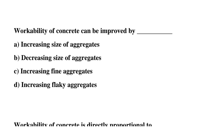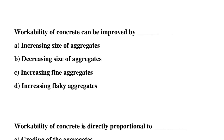So next question: workability of concrete can be improved by — option A: increasing size of coarse aggregate, option B: decreasing the size of aggregate, option C: increasing the fine aggregate, option D: increasing the flaky aggregate. So the correct answer is option A, increasing the size of aggregate.